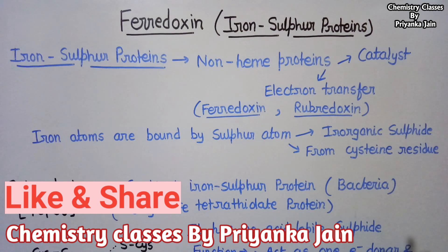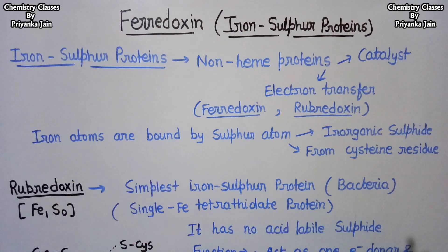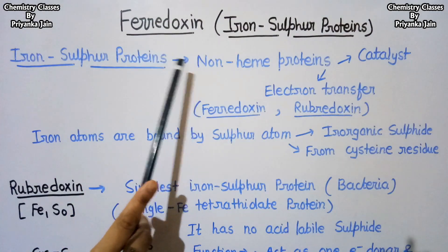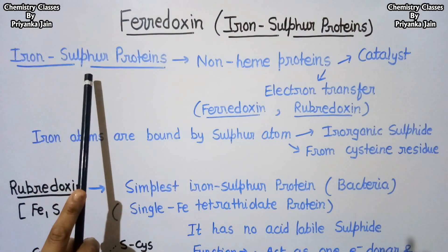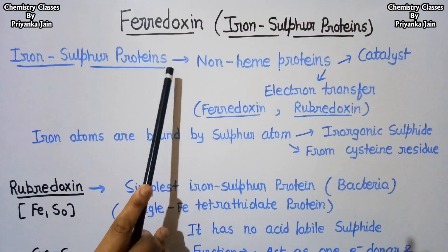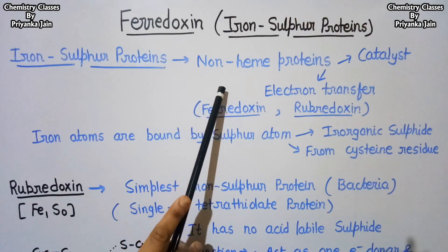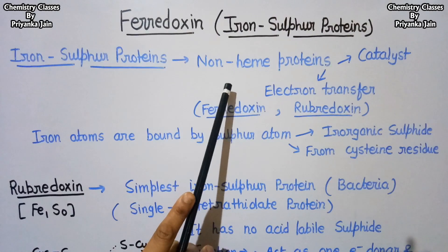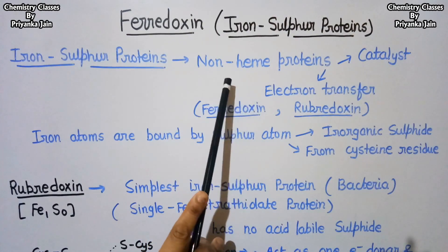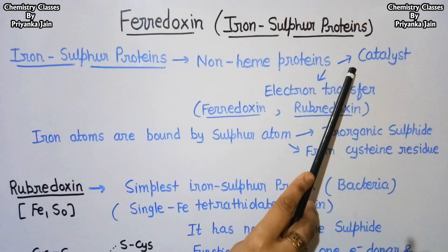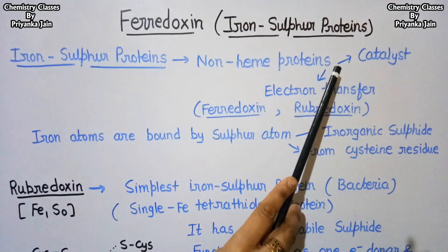Hello students, today I have made a video on bio-inorganic chemistry, specifically about iron-sulfur proteins, and especially about ferredoxin. Ferredoxin is an example of iron-sulfur proteins. These are non-heme proteins, meaning these proteins possess iron but the iron is not present in the form of heme — there is no heme group present. Iron-sulfur proteins are of two types: one type acts as a catalyst, such as the hydrogenase enzyme.